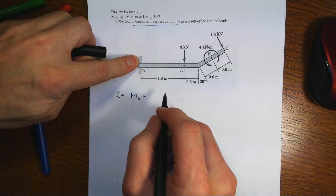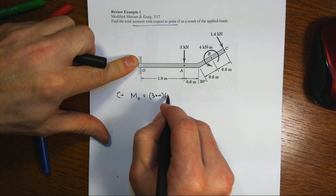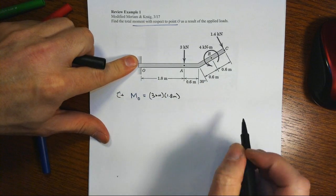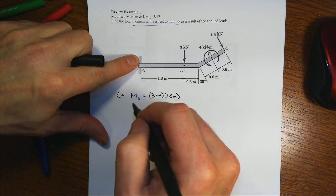So we've got 3 kilonewtons times a 1.8 meter distance, and that wants to spin clockwise, so that's a plus.